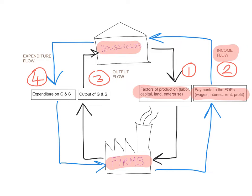The households take this income that they earn and they spend it on goods and services, which gives us the expenditure flow. At the same time, there's the output flow, which is when the firms take the factors of production and, in return, produce the output of goods and services.